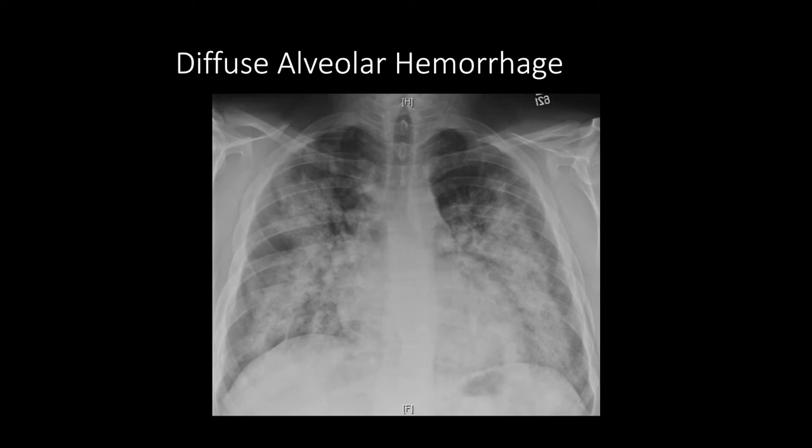If you see something that looks like edema but the patient doesn't have a good clinical reason for edema, the heart size is normal, and there are no pleural effusions, you should think of a non-cardiogenic edema pattern. This can include neurogenic non-cardiogenic pulmonary edema, alveolar hemorrhage, and diffuse alveolar damage in the setting of ARDS.